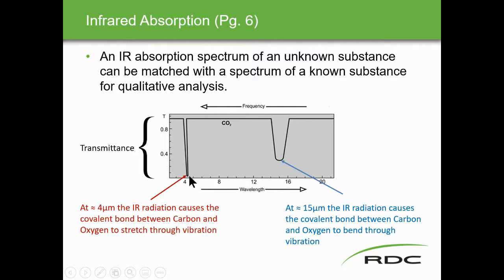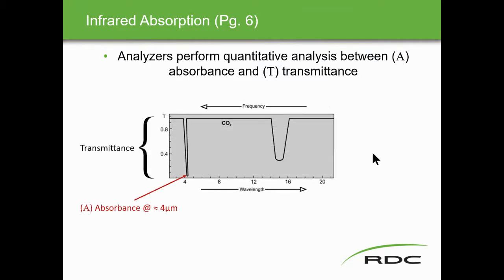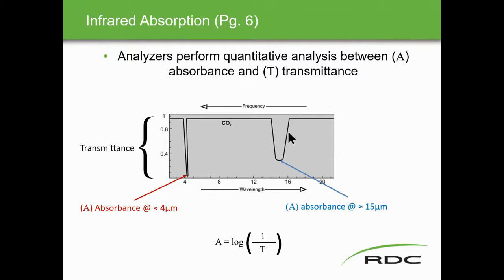Analyzers perform qualitative analysis using absorbance (A) and transmittance (T). The formula is: absorbance equals the log of one over transmittance (A = log(1/T)). This formula appears in your formula sheets and comes up quite frequently since we're always talking about transmittance and absorbance.